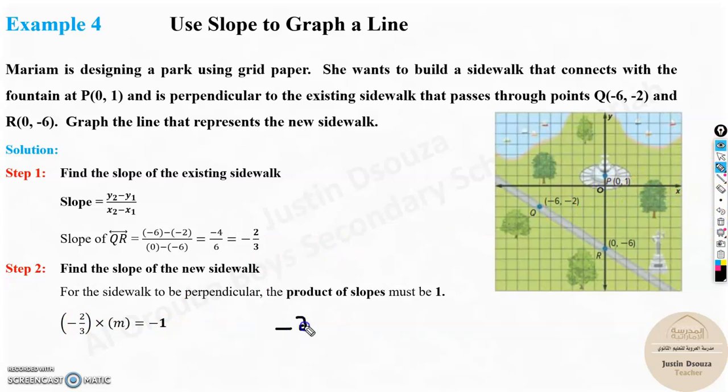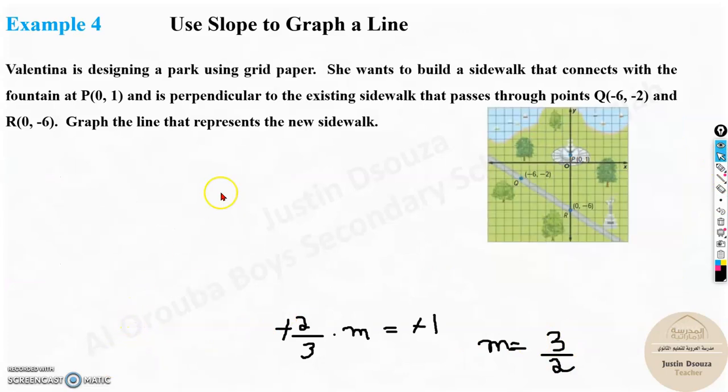So just solve that. So it basically is minus 2 by 3, when you multiply with m, must be equal to minus 1. So the signs cancel and this 3 goes to the other side. m will be 3 to the above and 2 to the denominator. So this answer will be 3 by 2 or 1.5.